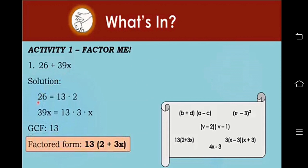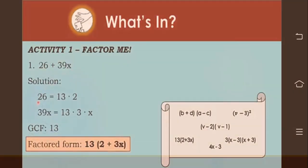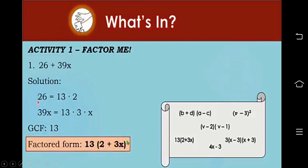For number 1, we have 26 plus 39X. In order to factor that out, we list the factors of 26, which are 13 and 2. We also list the factors of 39X, which are 13 times 3 times X. Notice that 13 is common to both 26 and 39X, so we call it the greatest common factor. To express this in factored form, we divide 26 by 13, which gives 2, and 39X divided by 13 gives 3X. So the factored form is 13 times the quantity of 2 plus 3X.